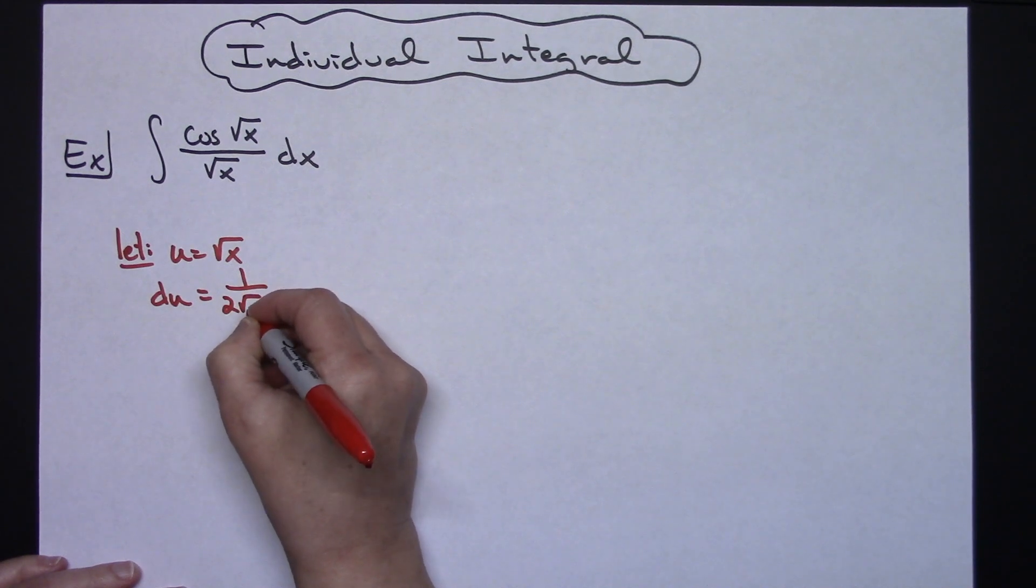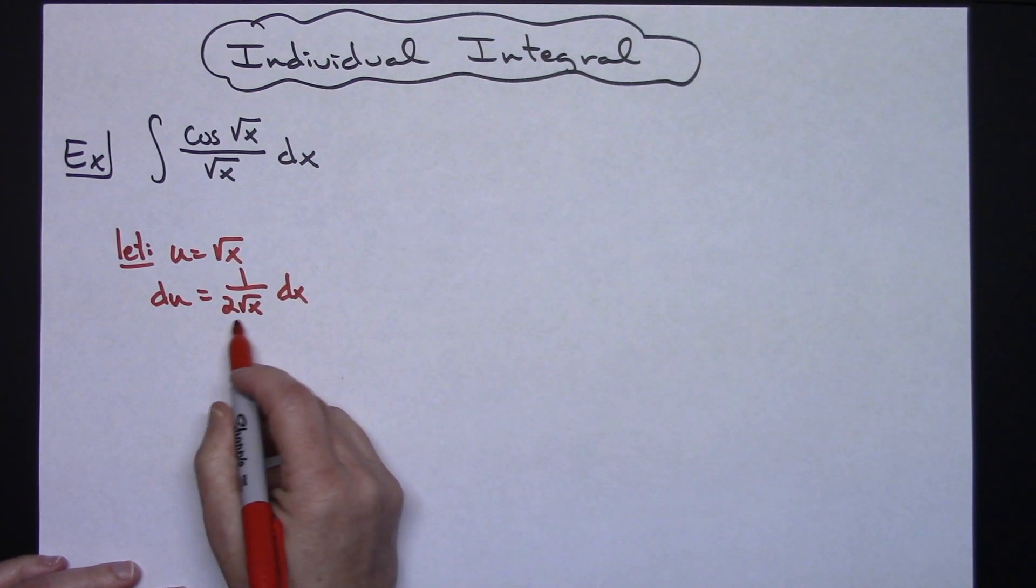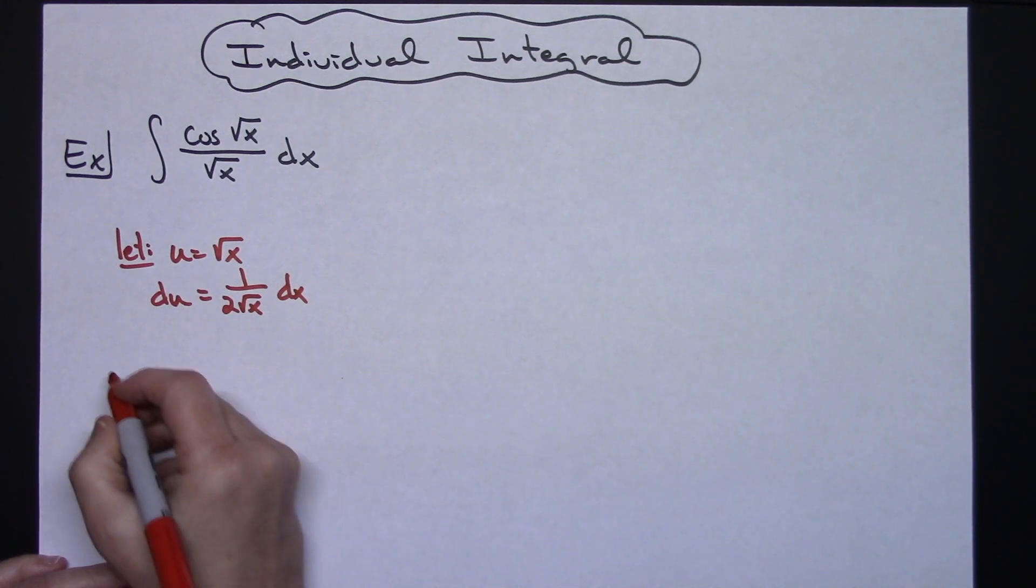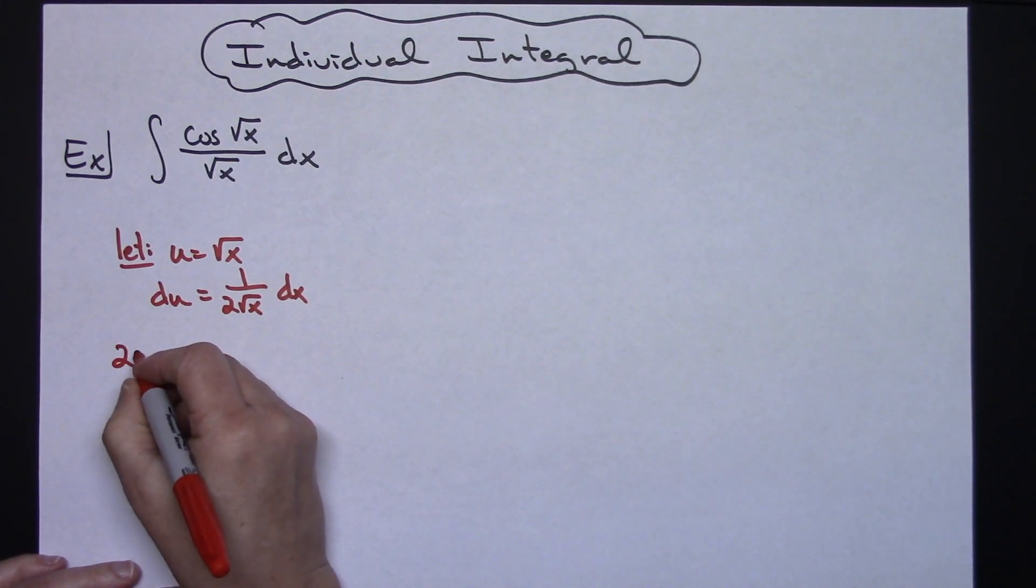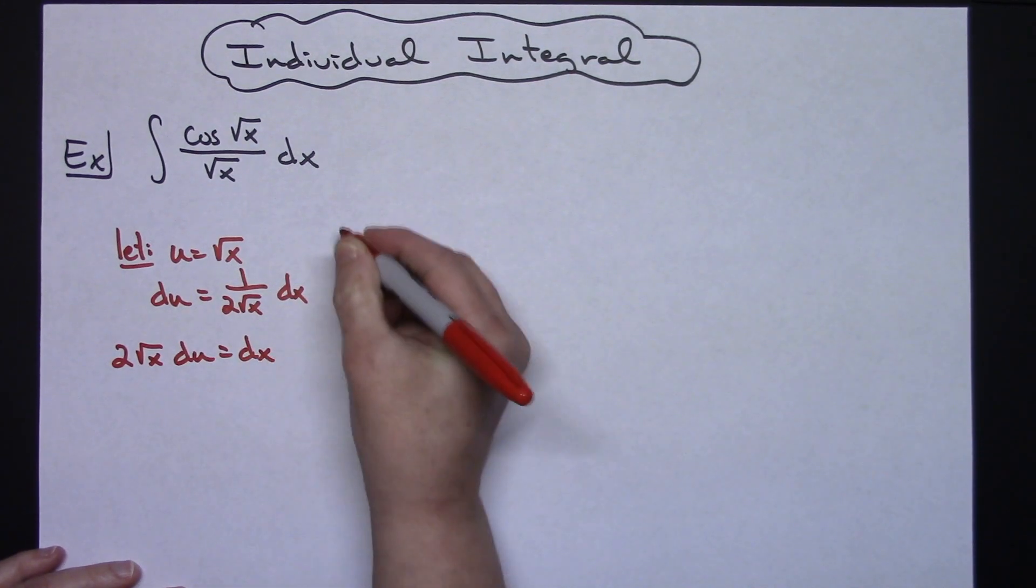1 over 2 square root of x dx, and I'm going to go ahead and solve for dx, multiplying both sides of the equation by that 2 square root of x. So 2 square root of x du is equal to dx.